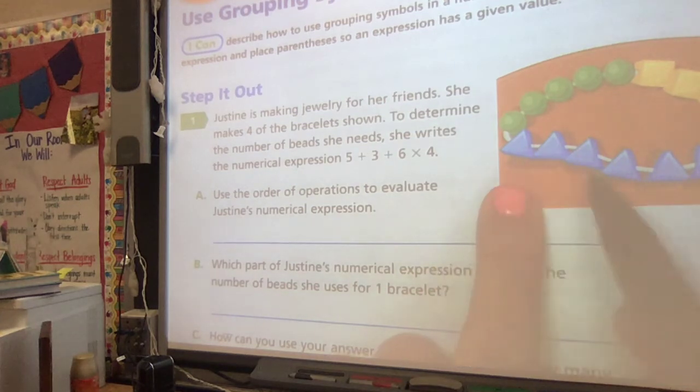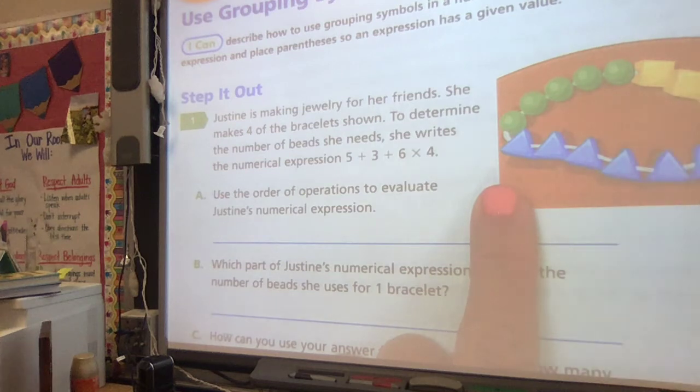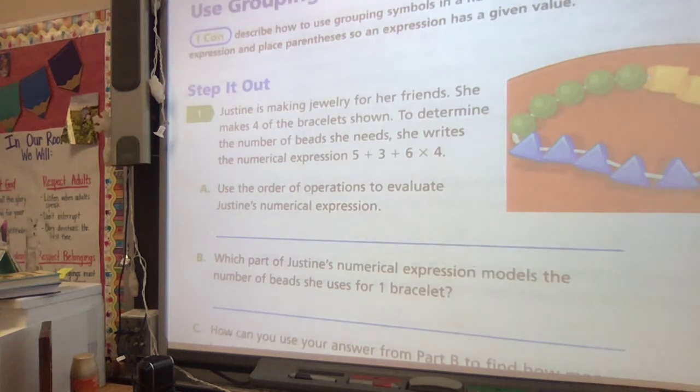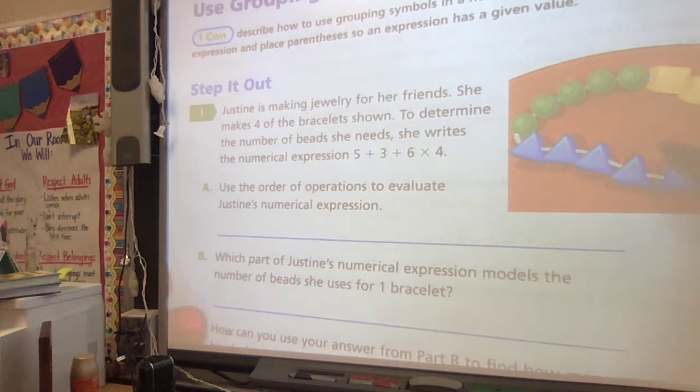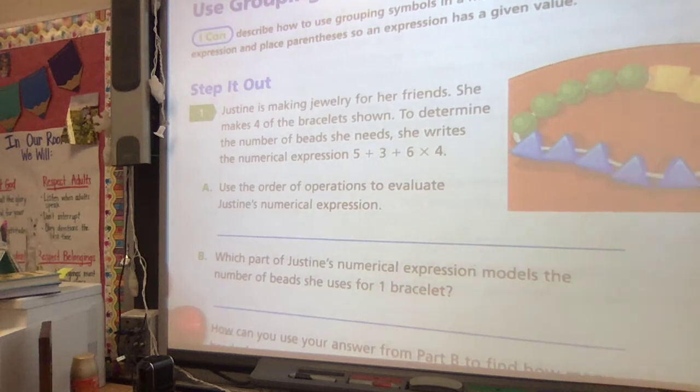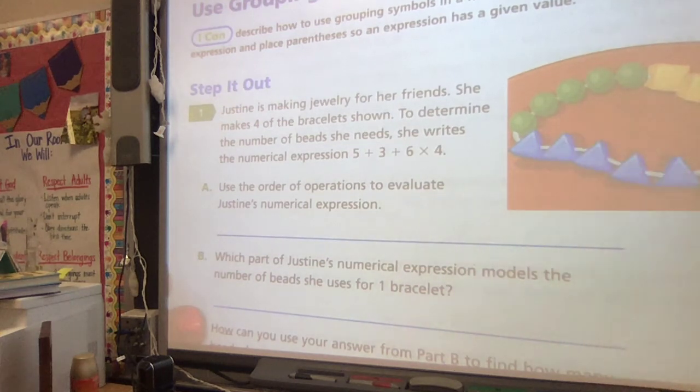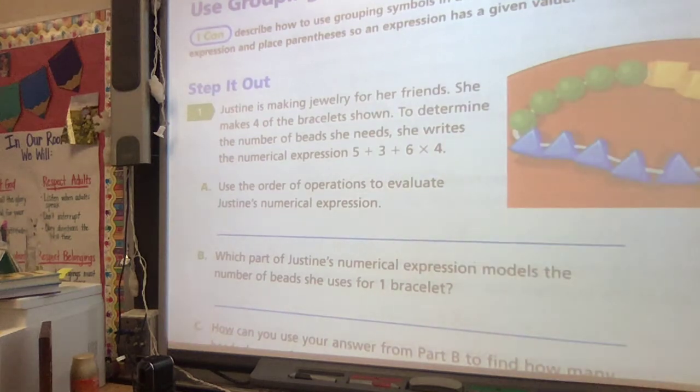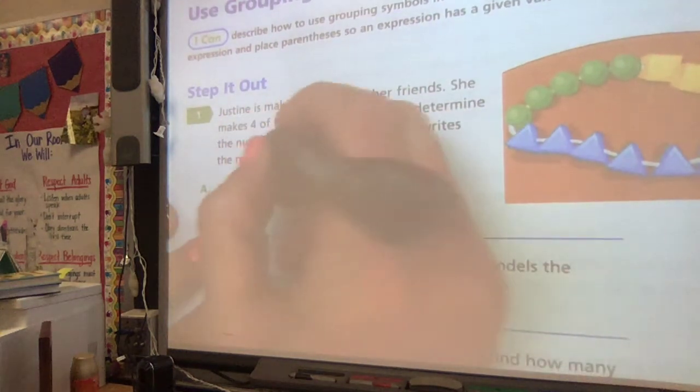She's got 6 triangles, 1, 2, 3, 4, 5 circles, and 1, 2, 3 squares or cubes. So she knows she needs 5 of those, 3 of those, and 6 of those, and she needs that 4 times in order to make 4 bracelets.